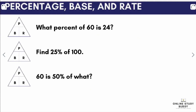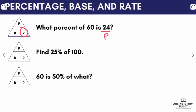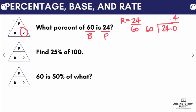Let's apply this. First example: what percent of 60 is 24? We are looking for the rate R. To solve for the rate, we divide the percentage by the base: 24 ÷ 60. Since the dividend is smaller, we add a decimal and zero, and proceed. In 240 there are 4 60s, so our answer is 0.4. To express this in percent form, we move two decimal places to the right, giving us 40%.